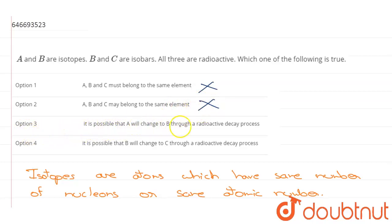Option 3 says it is possible that A will change to B through a radioactive decay process. Now, since A and B are already the same elements, they cannot interchange between each other, and moreover, isotopes do not go through radioactive decay. So therefore, option number 3 is also incorrect.